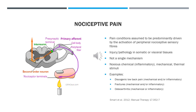Clinical presentations considered to reflect a relative dominance of nociceptive pain are those predominantly driven by the activation of peripheral nociceptor sensory fibres, triggered by injury or pathology in somatic or visceral tissues. Nociceptive pain does not reflect a single mechanism — it may reflect a range of neurobiological mechanisms, including activation of peripheral nociceptor receptors in response to noxious chemical, inflammatory, mechanical, or thermal stimuli. Classical examples include discogenic low back pain, fractures, and osteoarthritis.